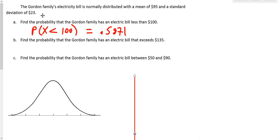Alright, so now let's go further into this question. The Gordon family's electric bill, remember, was normally distributed with a mean of 95 and a standard deviation of 23. Well, normally distributed means that we had the bell curve.